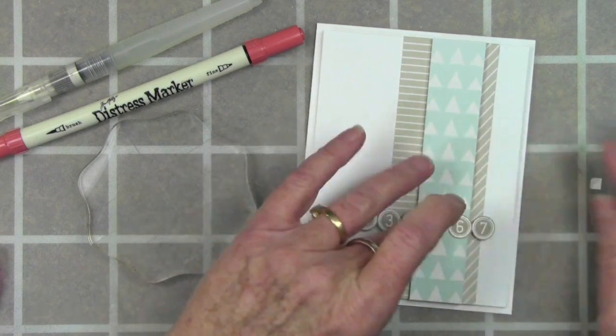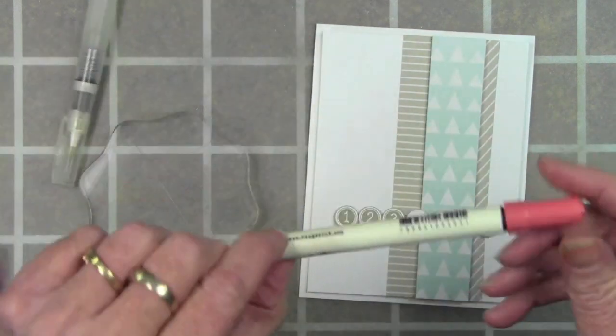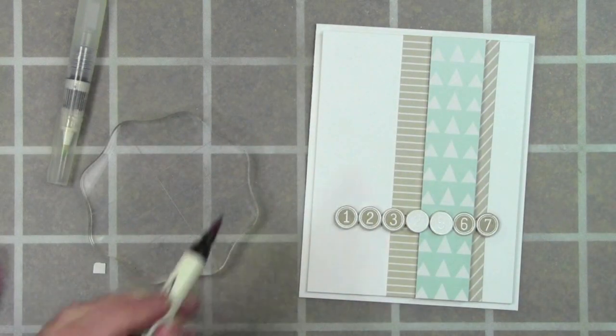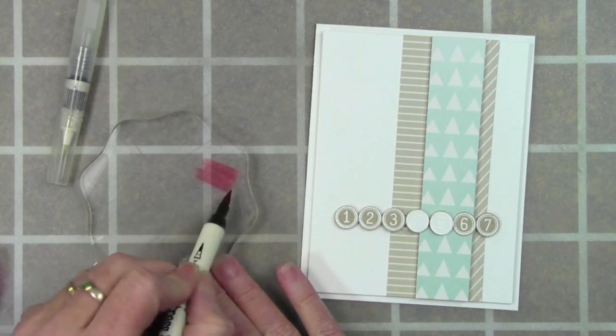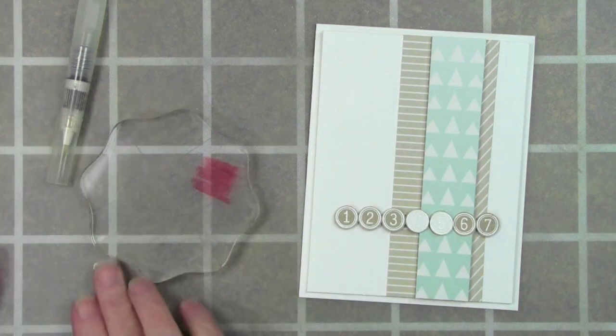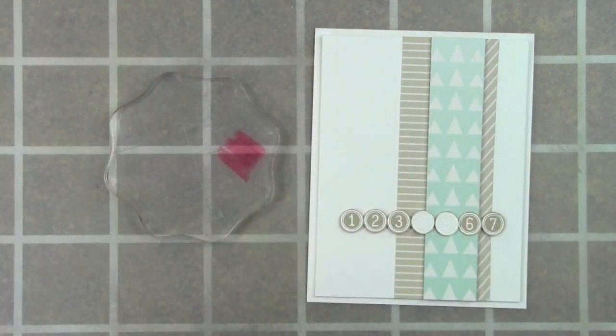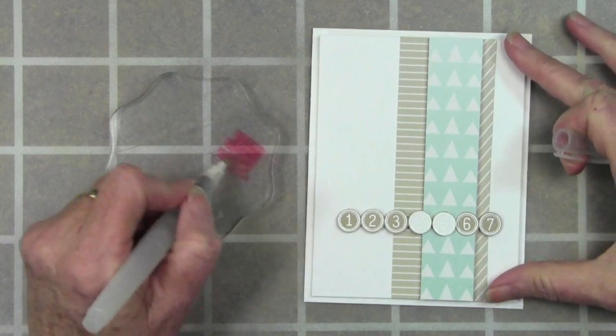Once I have those in place, I have my Distress Marker barn door here and I'm going to scribble this onto my acrylic block and I'll be using my water brush pen to do some water coloring. This is a really simple technique and so my white embossing will resist the water color.